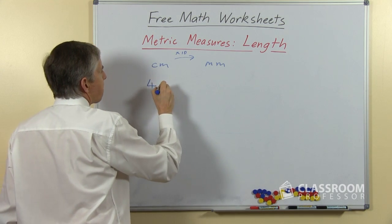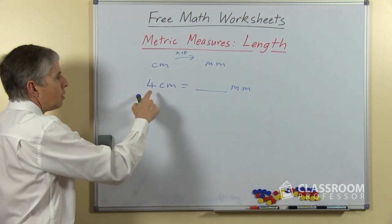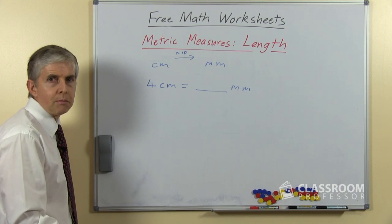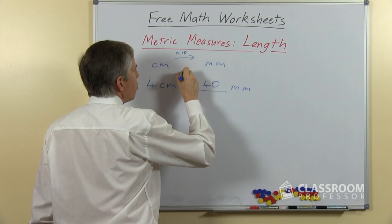So every centimeter equals 10 millimeters, so we're multiplying by 10. 4 centimeters will be how many millimeters? Of course that will be 40, because that's 4 times 10.